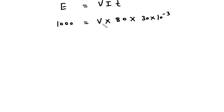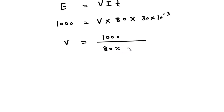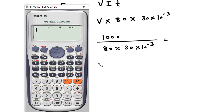From this we can find the value of voltage V. So V is equal to 1000 divided by 80 multiplied by 30 into 10 to the power minus 3, which is 1000 divided by 80 multiplied by 30 multiplied by 10 to the power minus 3.